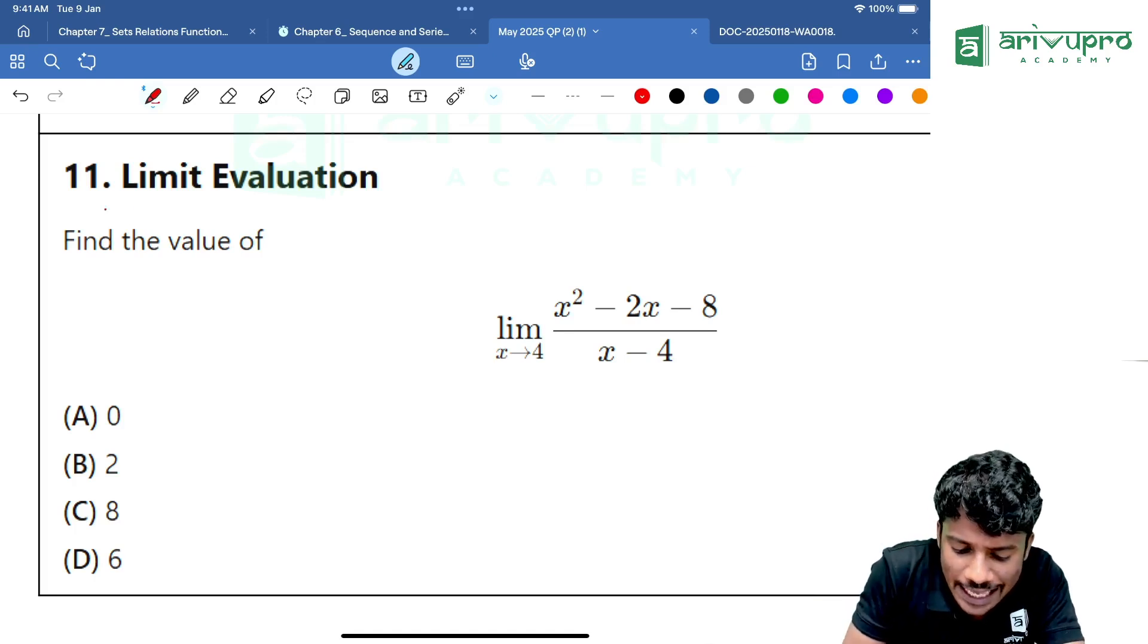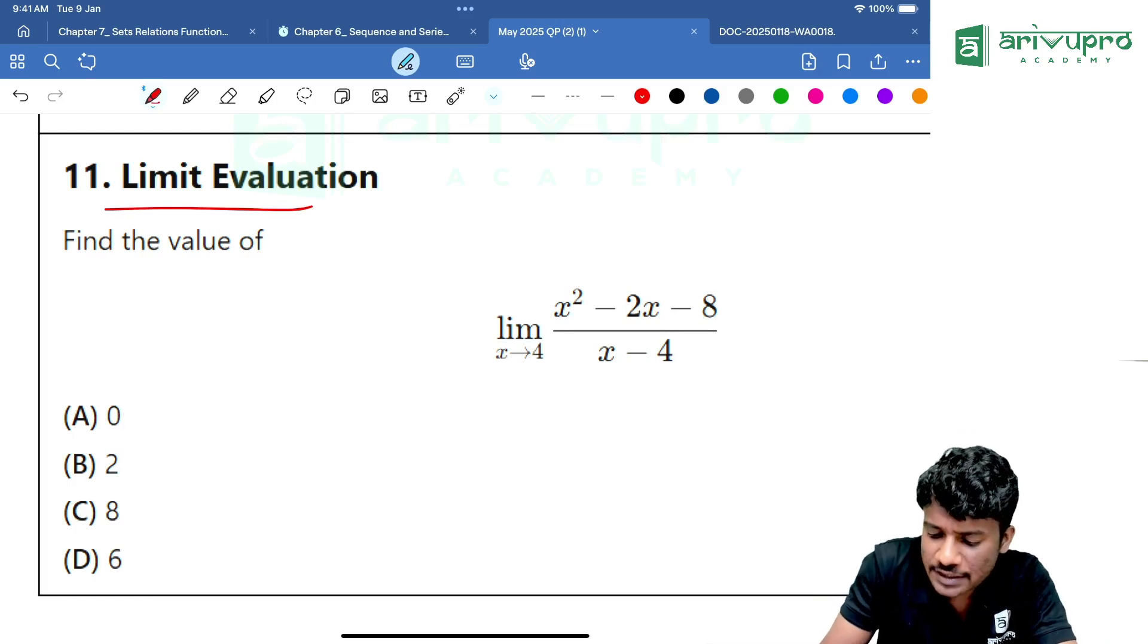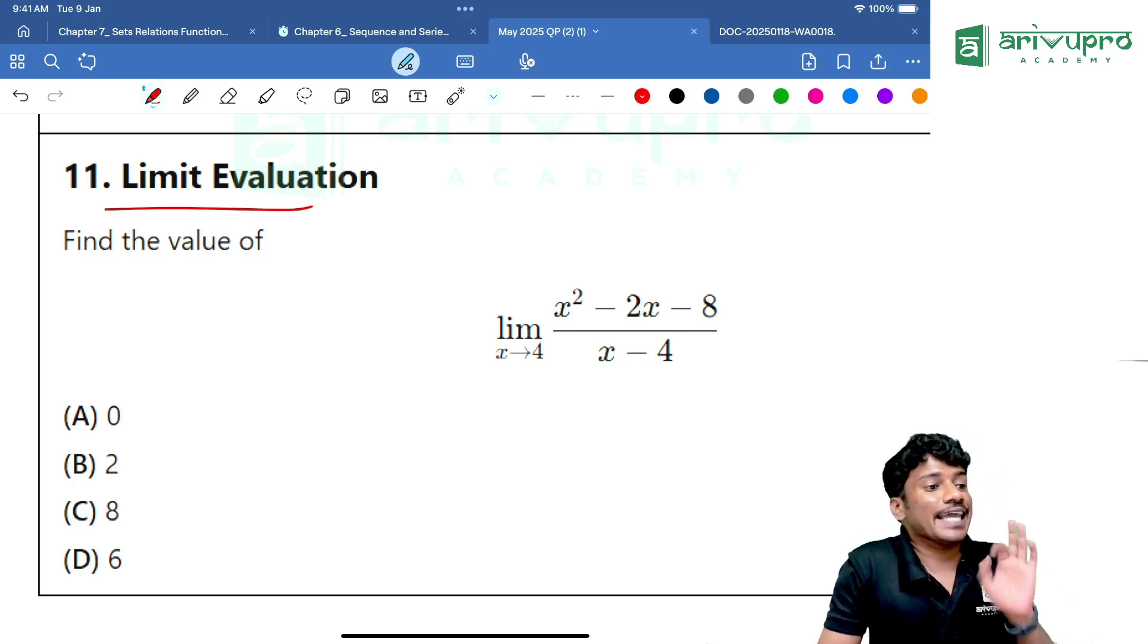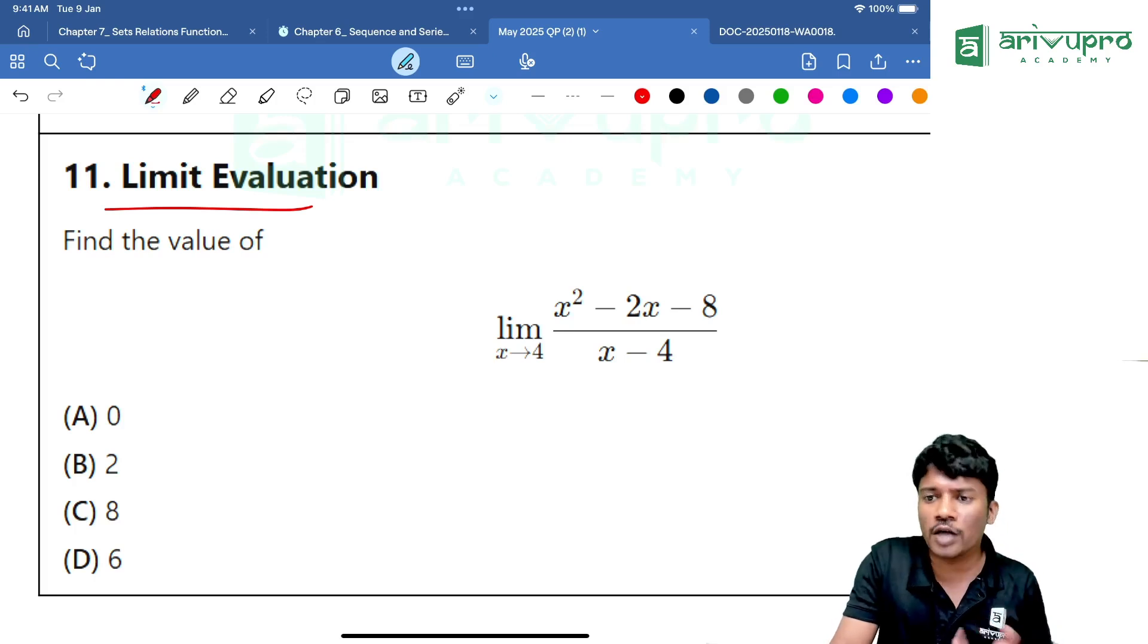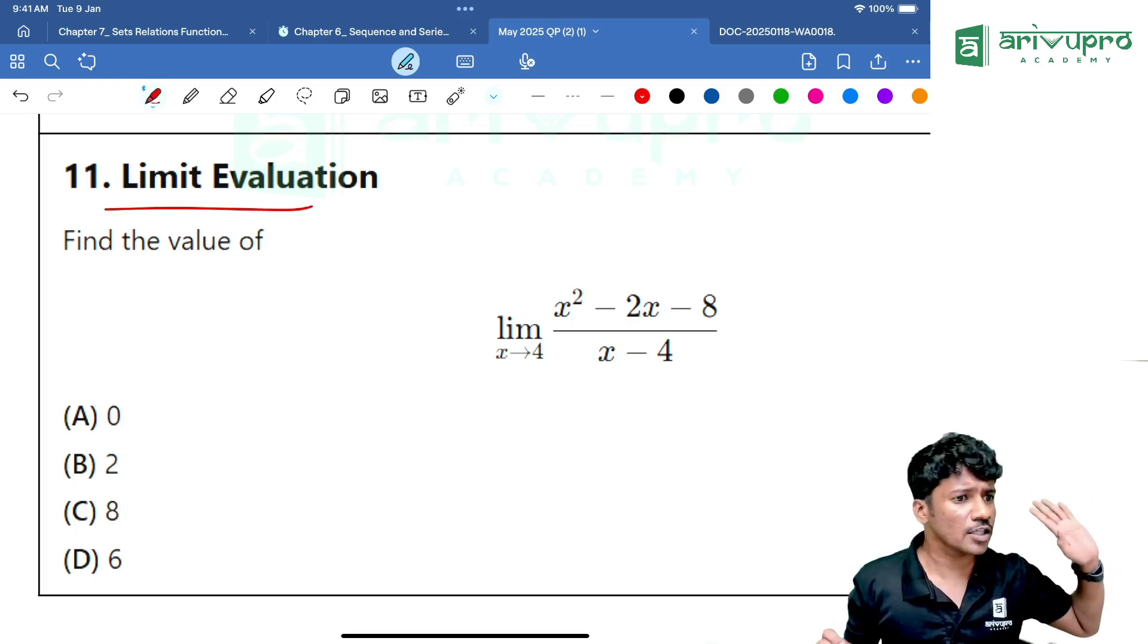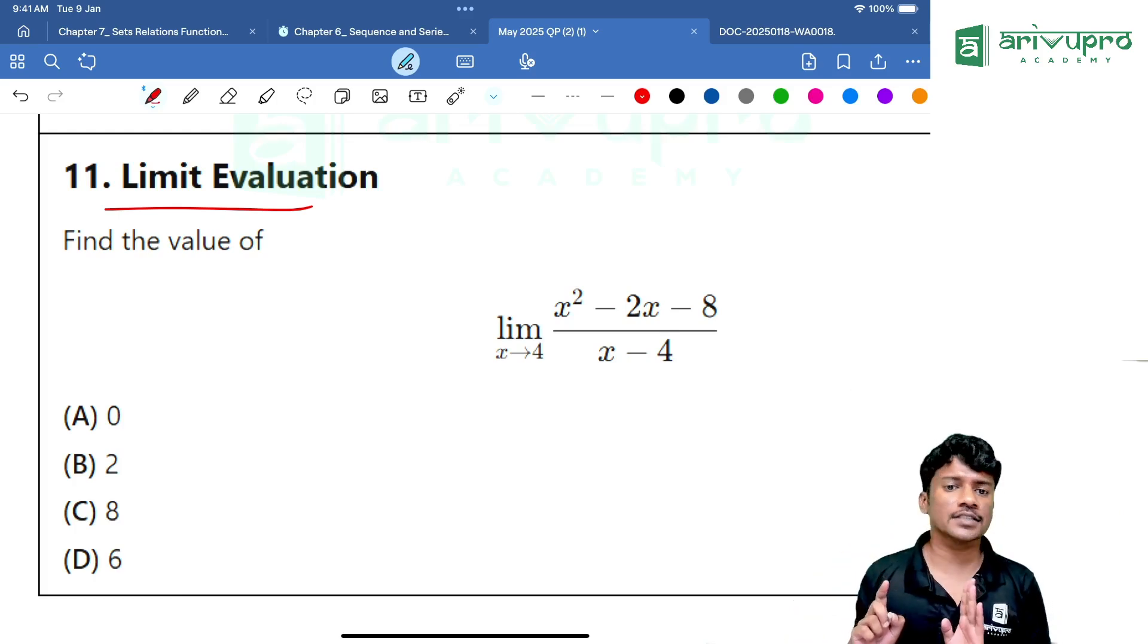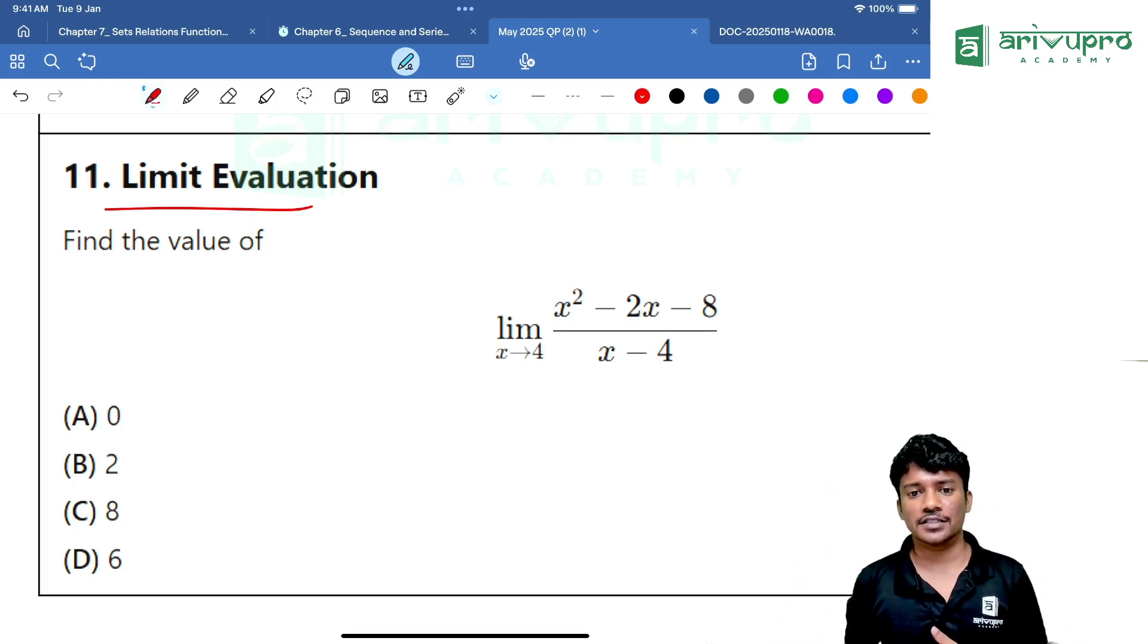Everyone, listen carefully. The next question is limit evaluation based question from the major term. That is, limit X tends to 4, X square minus 2X minus 8 divided by X minus 4. Can you directly apply the limit? Will it give you the answer? It will give you 1 by 0 that is not defined. How to do this? There are two steps. One step is, you can do using the differentiation L-Hopital method or you can directly substitute by factorizing it. How to factorize it? You tell me.